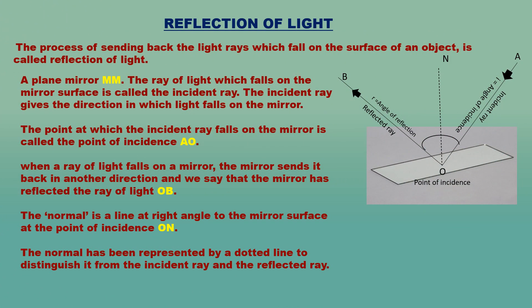Reflection of light: When light falls on the surface of an object, some of it is sent back. The process of sending back the light rays which fall on the surface of an object is called reflection of light. When a ray of light falls on a plane mirror or any other plane surface, it is reflected according to some laws called the laws of reflection of light.